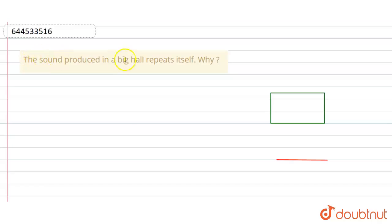Hello everyone, the sound produced in a big hall repeats itself. Why? Now suppose you're in a big hall and the sound is traveling. We know that the intensity is directly proportional to the square of amplitude. Therefore, the intensity of sound collides with the wall of the big hall because of its energy.